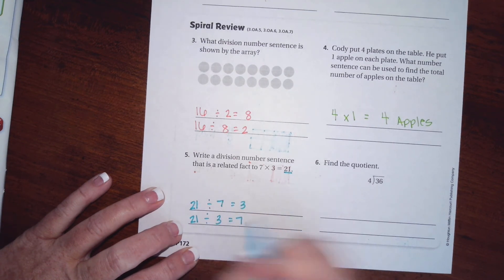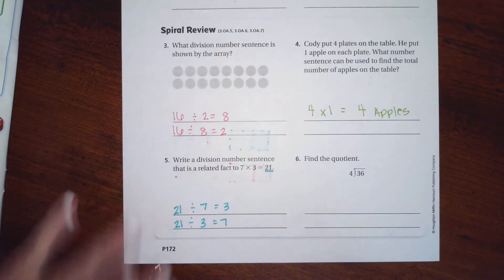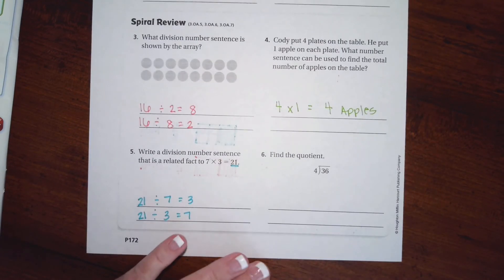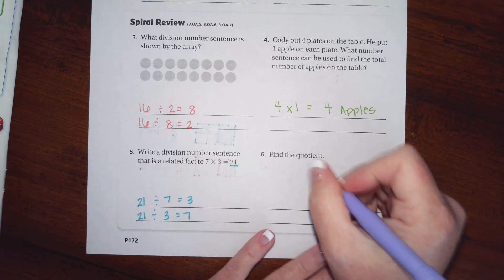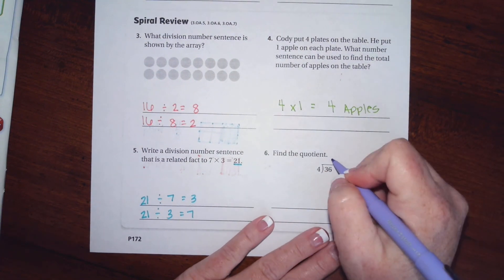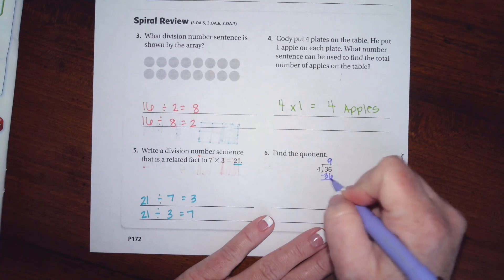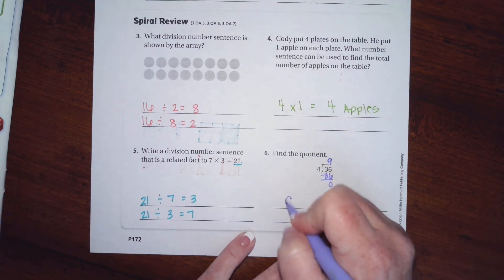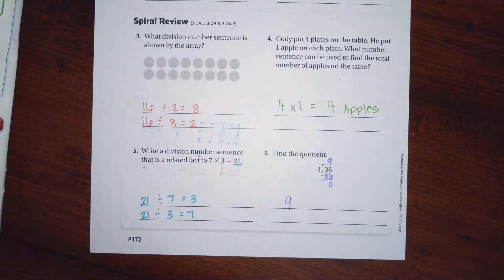Find the quotient. Well, I know that four goes into thirty-six nine times because four times nine is thirty-six. It's nine. All right guys, thanks for hanging out for chapter nine. Come on back for chapter ten. See you soon.